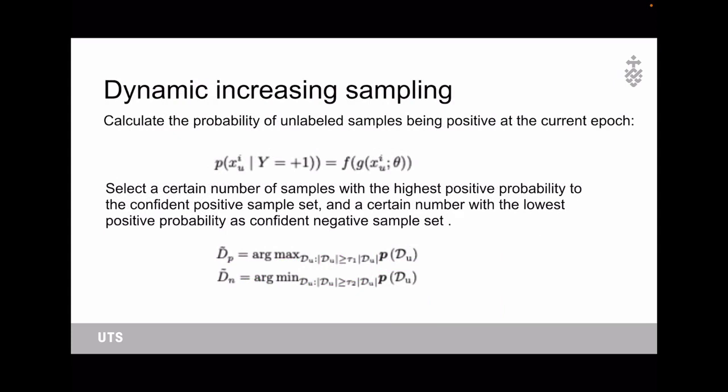First, we use dynamic increasing sampling to select confident positive and negative samples from the unlabeled samples. We calculate the probability of unlabeled samples being positive in the current epoch. Then we select a certain number of samples with the highest positive probability to the confident positive sample set, and a certain number with the lowest positive probability as confident negative sample set.